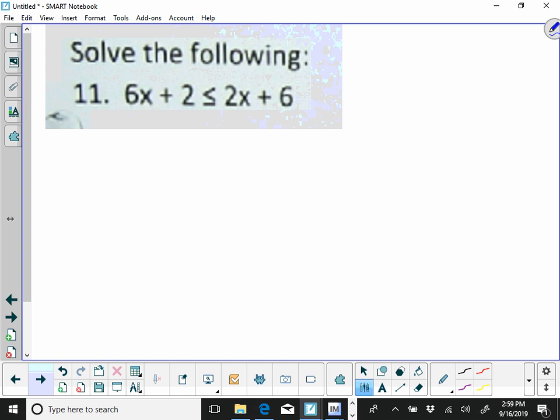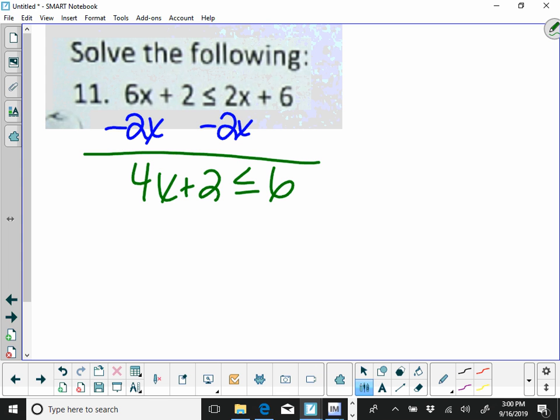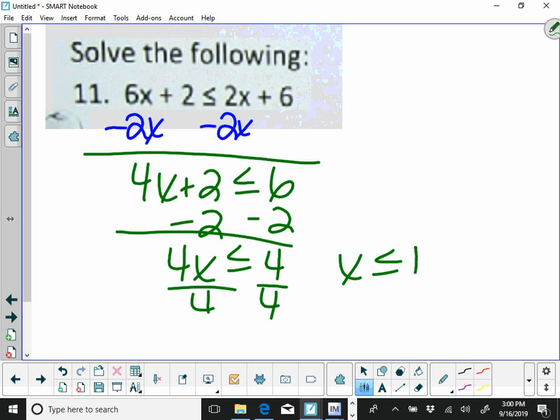So here I'm going to move my 2x first. So I'm subtracting 2x, that's going to give me 4x plus 2 is less than or equal to 6. And then I'm going to move my 2, which is going to give me 4x is less than or equal to 4. Divide by 4, and x is less than or equal to 1. There was no dividing by a negative there, so you did not have to flip your sign.